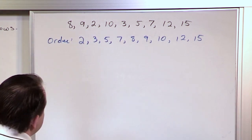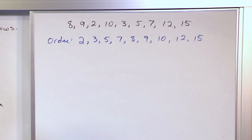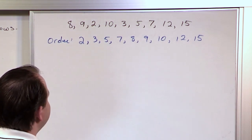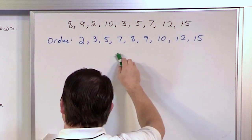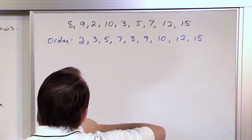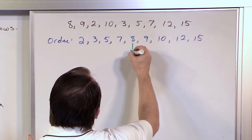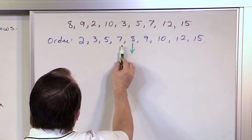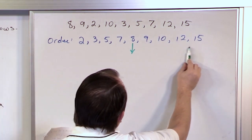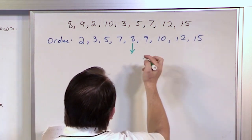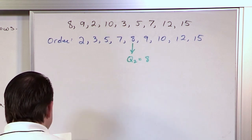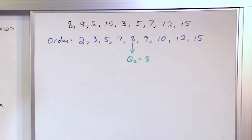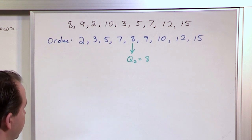Now the first thing we do is find the middle of the entire data set. We have 9 values. So the value 8 is exactly in the middle because I have 4 values below it and 4 values above it. So this one really is Q2 because that's the median of the entire thing. So we've already found one of them.